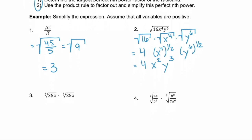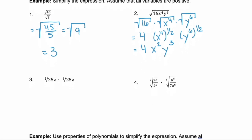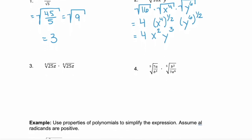Let's look at a couple more examples. In example three, we have two separate radicals. First, we always want to check: do they have the same index? Yes, they do — they both have an index of 4. So we can combine these if we choose, since that's the easiest option.